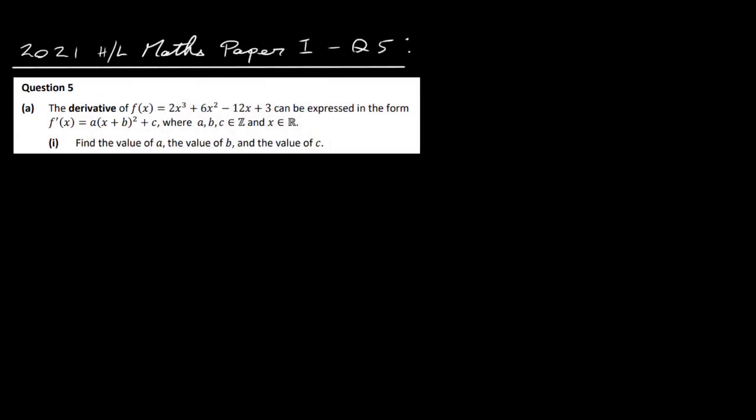In this video I'm going to look at the 2021 Higher Level Maths Paper 1 Question 5. In part A, we have a function f of x which is 2x cubed plus 6x squared minus 12x plus 3. We need to differentiate it, which gives us a quadratic expression, and then convert that into completed square form: a times x plus b all squared plus c. We need to find the values of a, b and c.